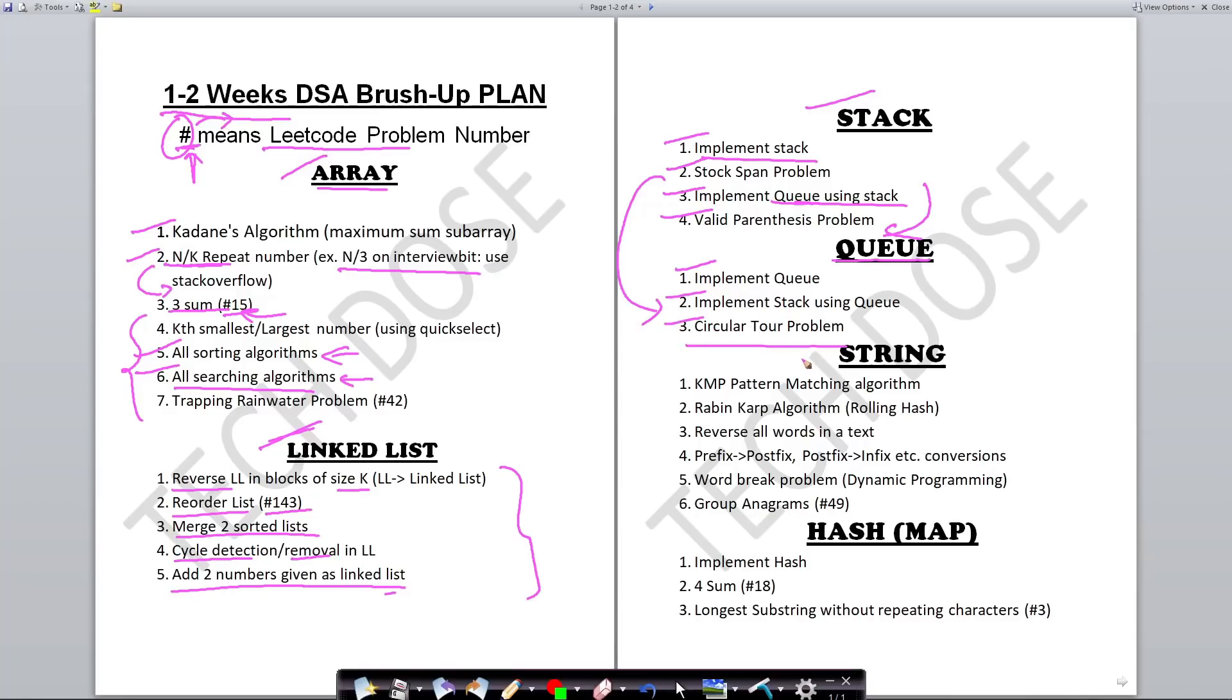In the string part, KMP pattern matching algorithm is very important along with the Rabin-Karp algorithm, also known as rolling hash. All these topics have been explained in my videos. Now, reversing all words in a text, prefix to postfix, postfix to infix and vice versa conversions, word break problem from dynamic programming—this is DP on string—and the group anagrams problem from LeetCode #49.